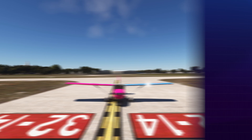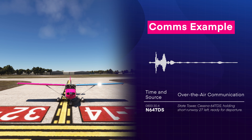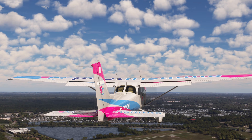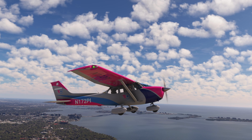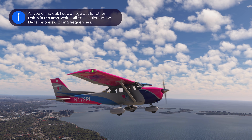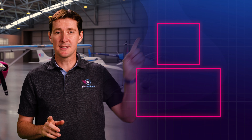When you're ready to go, contact the tower: 'State Tower, Cessna 647 Delta Sierra, holding short runway 27L, ready for departure.' The tower will then clear you for takeoff and give departure instructions — for example: 'Cessna 647 Delta Sierra, cleared for takeoff, runway 27L, fly runway heading.' After you've cleared any conflicting traffic, the tower will clear you on course. As you climb out, keep an eye on other traffic. If you requested VFR flight following, the tower will tell you when to contact departure. Otherwise, wait until you clear the Delta before switching frequencies.